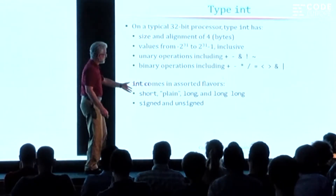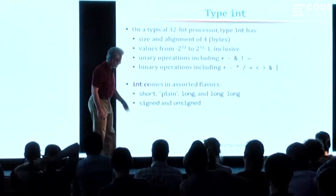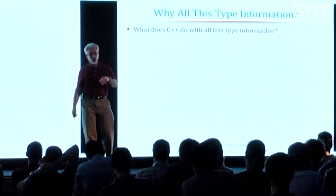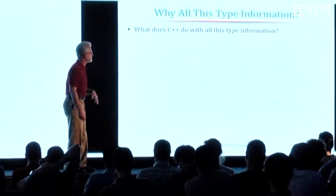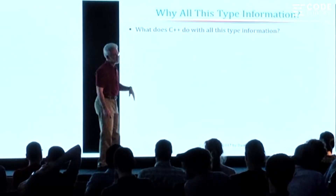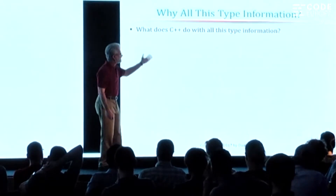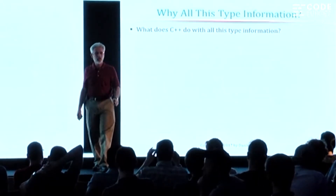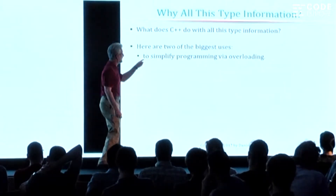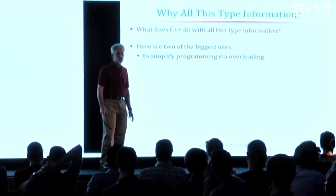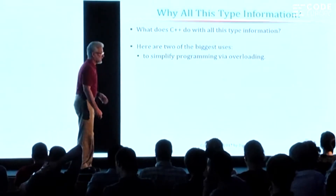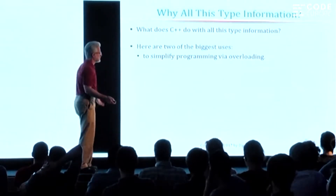Int also comes in some varieties like short and long long, and you can have signed and unsigned. So what does C++, or for that matter any language that uses static type information, do with that type information? I'm going to give you what I think are the two big reasons. One of them is they simplify programming through overloading — most operators and built-in operators are overloaded, and it makes life easier for most programmers.